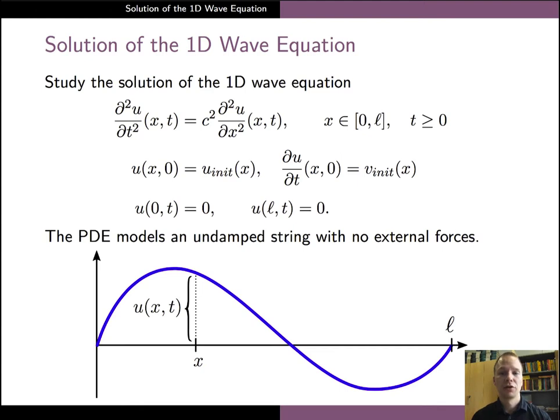The unknown function u describes the displacement of the string at a spatial coordinate x and at time t. It should be noted that the model we study does not include any damping arising, for example, from resistance of air, which would slow down the movement of the string.